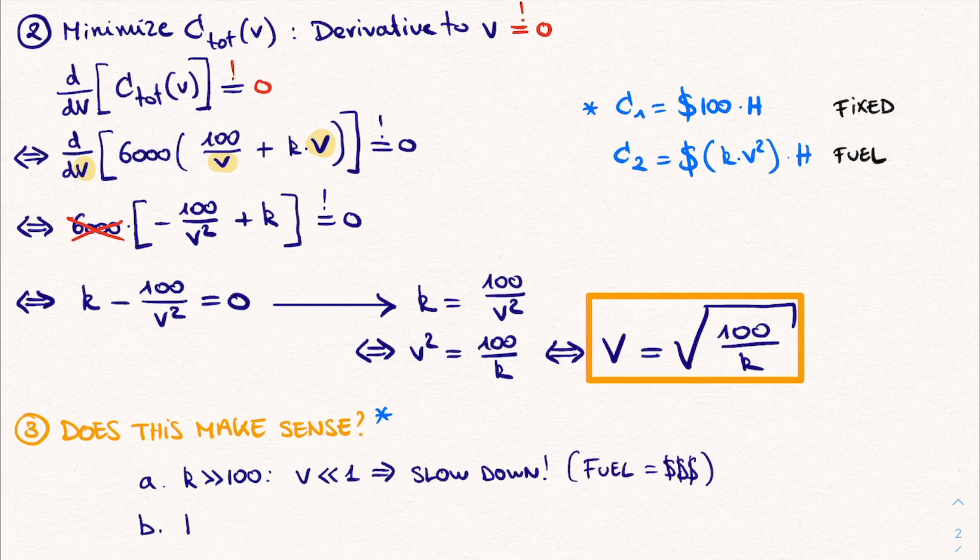In the other extreme case, where K is much smaller than 100, we see that C2 will be very small and C1, the fixed cost, will be the dominant component. And therefore we want to reduce this fixed cost. And this can only be done by increasing the velocity, such that the total number of hours, capital H, is reduced a lot. This means that in this case we need to speed up. And this inverse behavior of K compared to V does indeed show up in our result, making us more confident that we didn't make any mistakes.